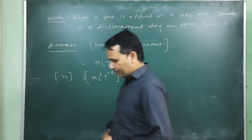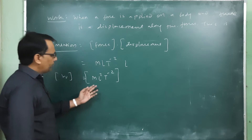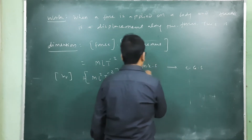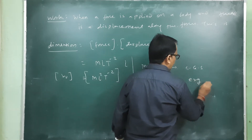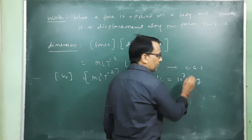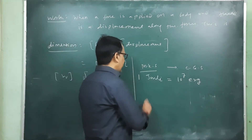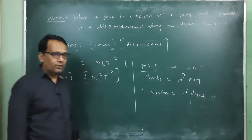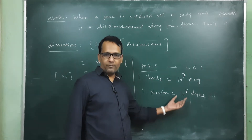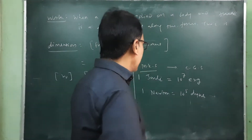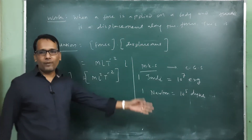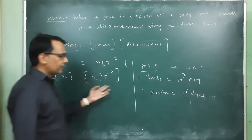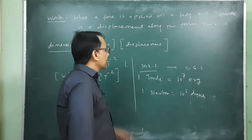The relation between Joule and Erg: converting from MKS to CGS, 1 Joule equals 10⁷ Erg. This is because 1 Newton equals 10⁵ Dyne (force conversion), and 1 meter equals 100 cm (displacement), giving a factor of 10⁵ × 10² = 10⁷.